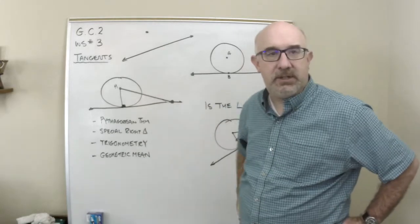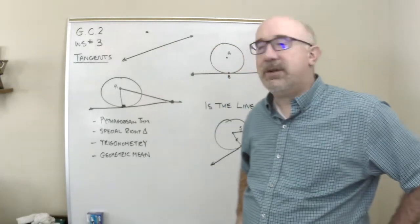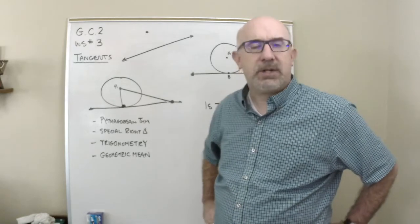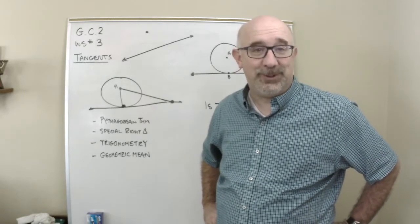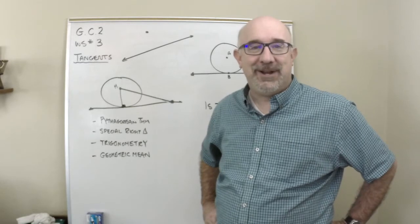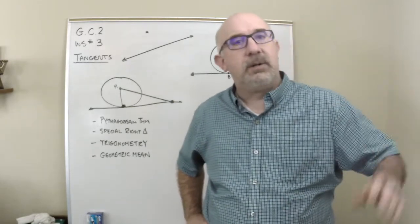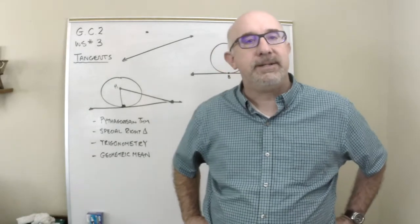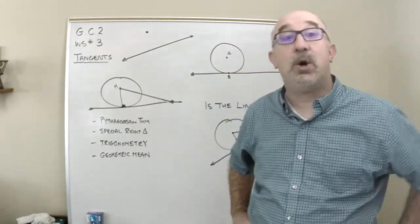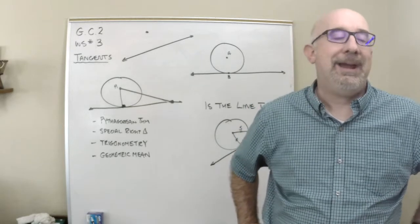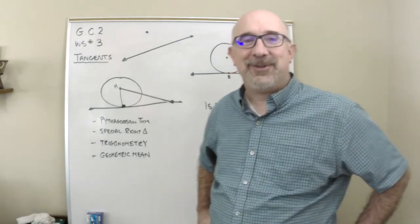Let's look at GC2, a huge standard. Now we're looking at Worksheet 2 which focuses directly on the tangent world — all things about tangents. We've already defined what a tangent is earlier, but it is a line that intersects a circle exactly once and only once. And there are some properties to know about how they operate.